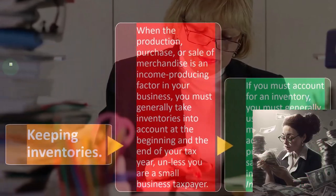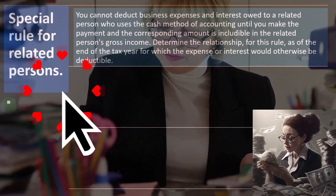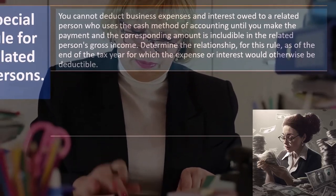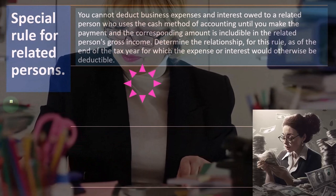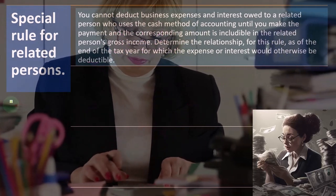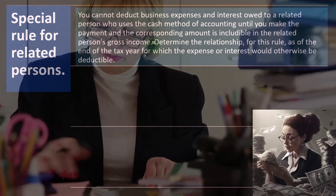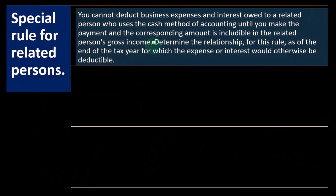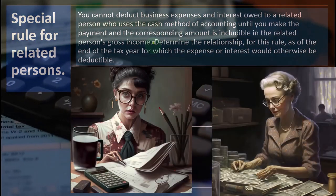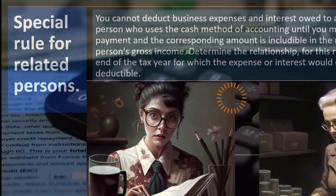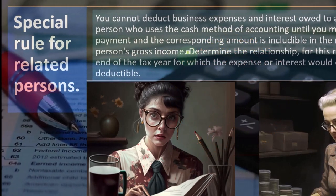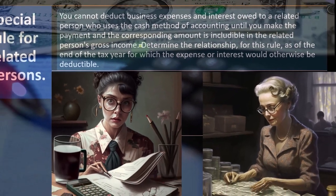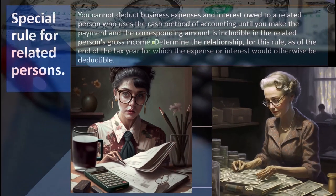Special rule for related persons: you cannot deduct business expenses and interest owed to a related person who uses the cash method of accounting until you make the payment and the corresponding amount is included in the related person's gross income. It gets messy when you're dealing with transactions involving a relative or related party, because you can start to manipulate the transactions and the timing between the two entities. The IRS is going to be skeptical that you'll use two entities to manipulate the timing of transactions.